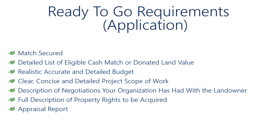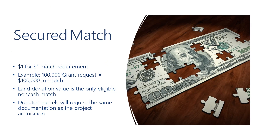When applying for an acquisition grant, it will be important to first determine if your project is ready to go, as projects that are not ready to go will not be considered for funding. You will need to make sure that your project has enough secured match. Acquisition projects require a dollar-to-dollar match. If you are requesting a $100,000 grant from DCNR, you will need $100,000 in secured cash match. The only allowable non-cash match is donated land value. Donated parcels being used as match will require the same documentation as the project acquisition parcel. If you plan on using donated land value as match, it is very important to discuss your project budget with your regional advisor prior to applying.